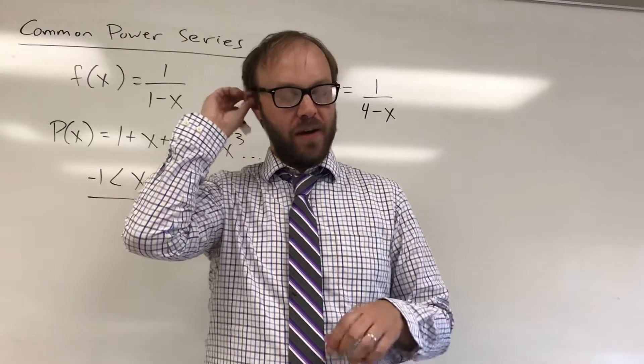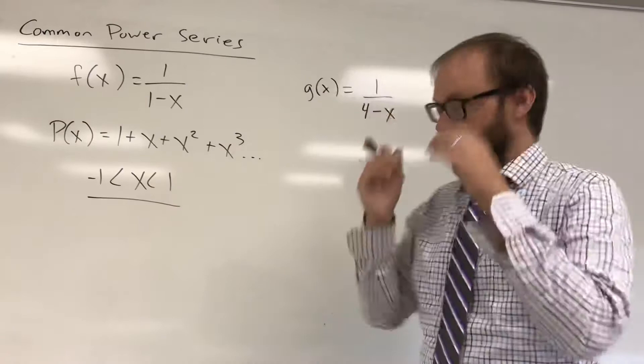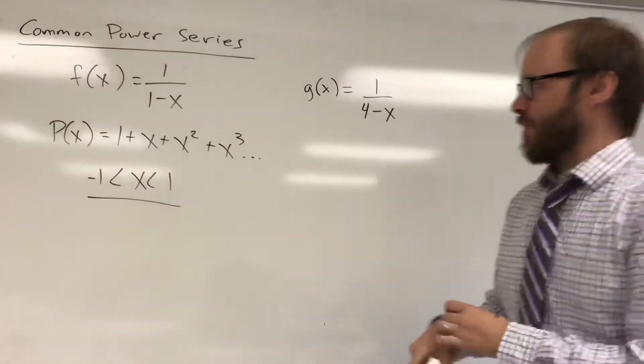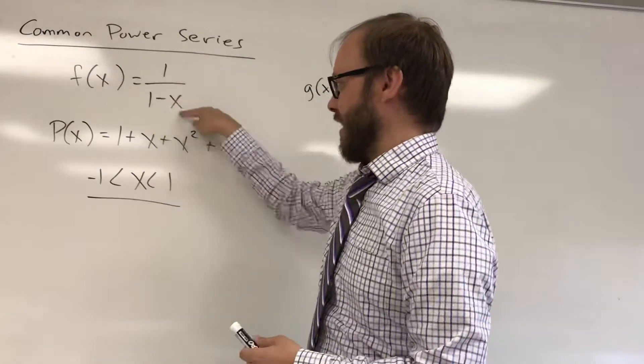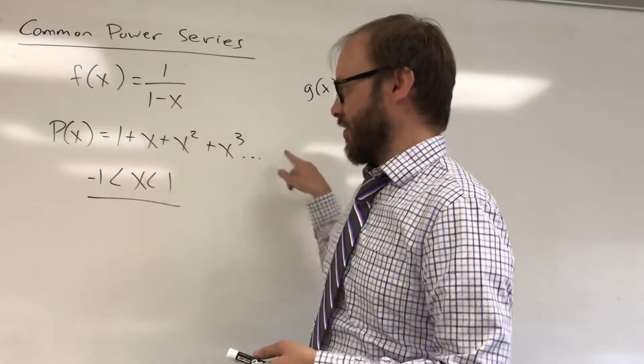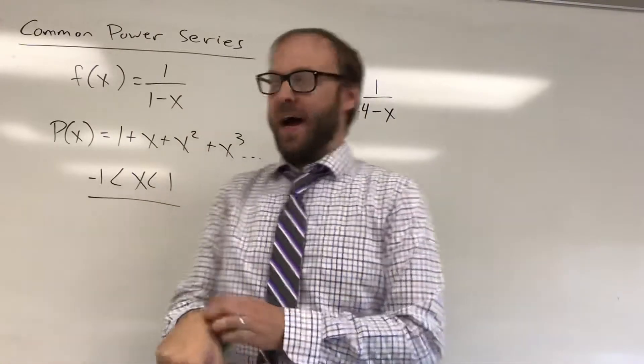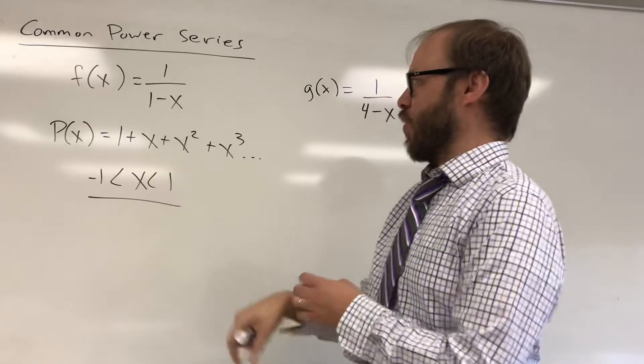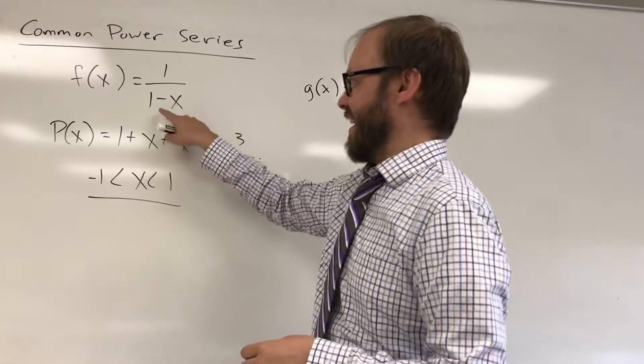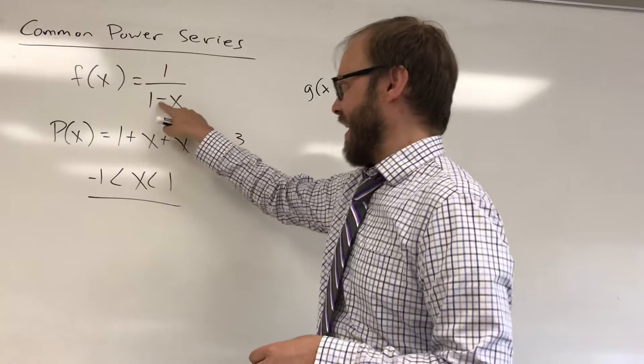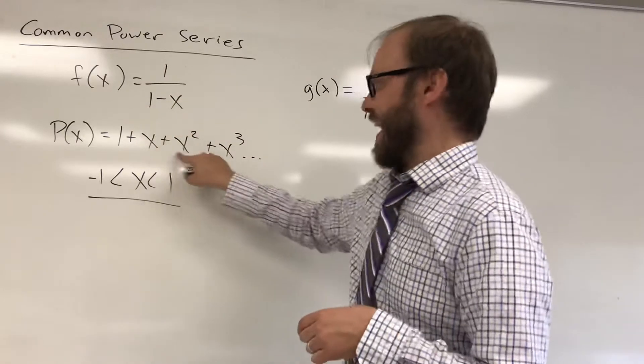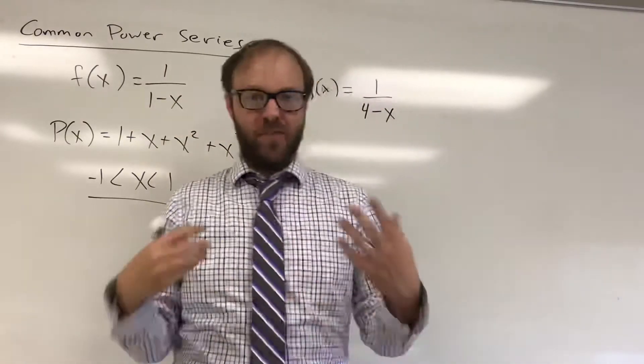So I want to show you an example of one that's maybe a little bit more complicated. We've looked at things like 2 over 1 minus x, where you could just multiply the whole series by 2, 2 plus 2x plus 2x squared and so on. We've looked at things where maybe it was 1 over 1 plus x, and you could write it as 1 over 1 minus negative x, and you could put a negative x in for each of those terms and you can get it to work out.